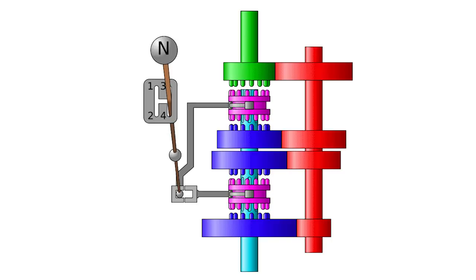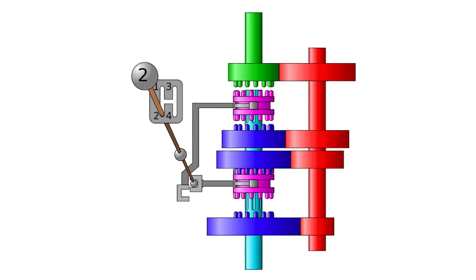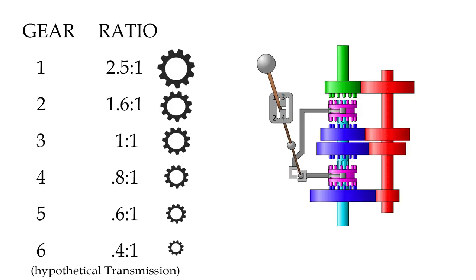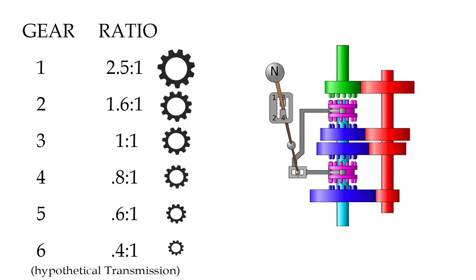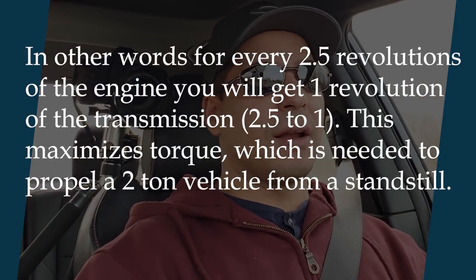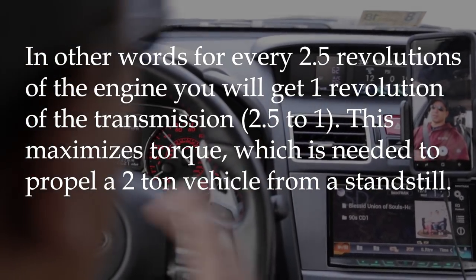Every gear presents a different ratio to the output of the engine. So let's say for first gear you have a ratio of 2.5, and then sixth gear you have a ratio of 0.4. So we've got 2.5 to 1, and then 0.4 to 1. That means that in first gear the output of your engine is 2.5 times faster than the output of your transmission. And on the other end, on sixth gear, it's going 0.4 times the output of your transmission. That's called overdrive.